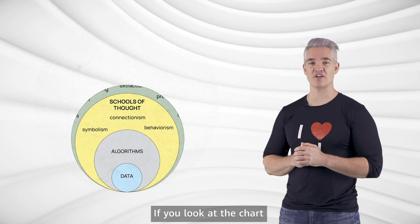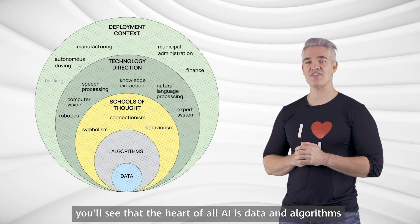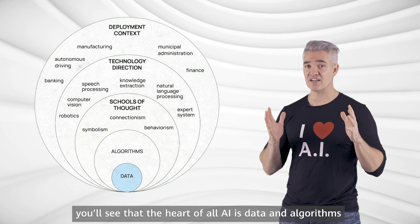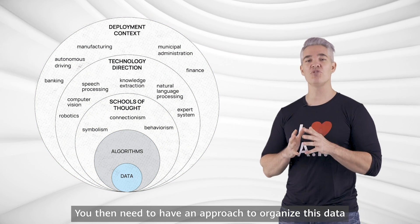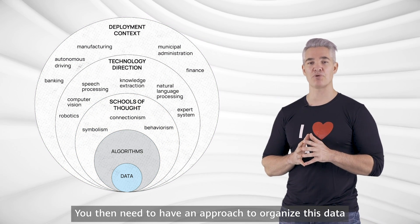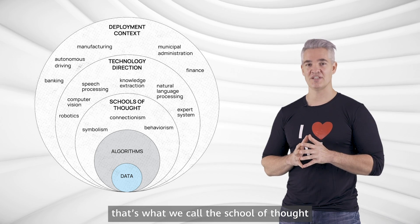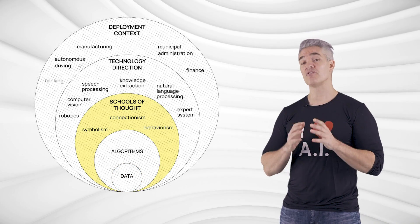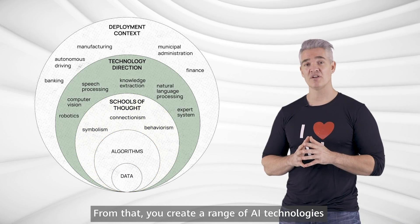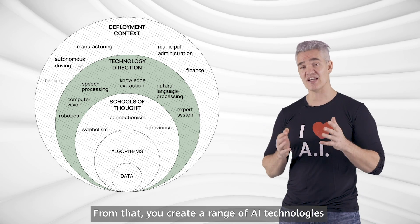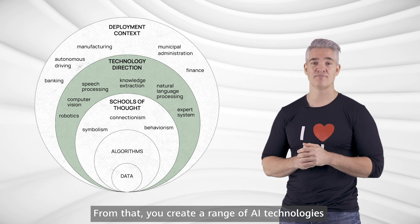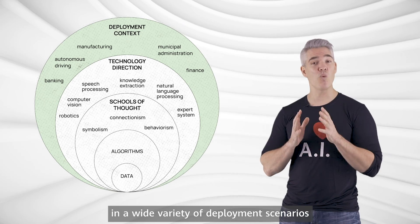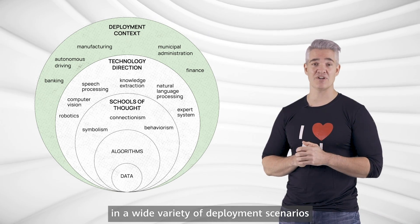If you look at the chart, you'll see that the heart of all AI is data and algorithms. You then need to have an approach to organize this data — that's what we call the school of thought. From that, you create a range of AI technologies, which are then applied in a wide variety of deployment scenarios.